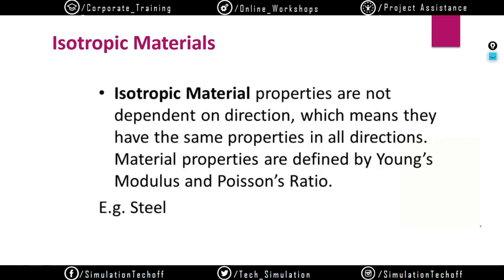When you get into analysis, you'll have different types of material cards. Based on the type of material, you choose the appropriate card. For isotropic material, you need to define Young's modulus and Poisson's ratio in a single direction — because it's a single value that doesn't vary with direction. If you choose an anisotropic card image and try to create an isotropic material, you can't — because you only have two spaces to define values: one for Young's modulus and one for Poisson's ratio.